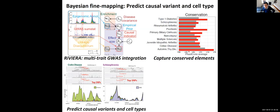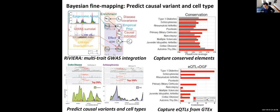When we do this — using a method called Riviera developed in our group — the SNPs prioritized by this posterior probability approach are more likely to be evolutionarily conserved compared to SNPs prioritized directly by GWAS, and they're much more likely to be localized in eQTLs and in digital genome footprints — high-resolution maps of DNA accessible sites and expression quantitative trait loci.